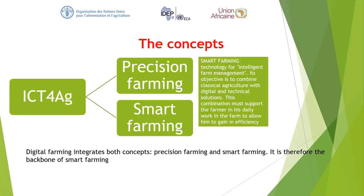When we look at ICT for agriculture, oftentimes we are looking at precision farming and smart farming. What is smart farming? It's basically technologies for intelligent farm management, and its objective is to combine classical agriculture with digital and technical solutions. Digital farming integrates both concepts — precision farming and smart farming — and is therefore the backbone of smart farming. The ICT aspect of agriculture is what makes it smart farming.